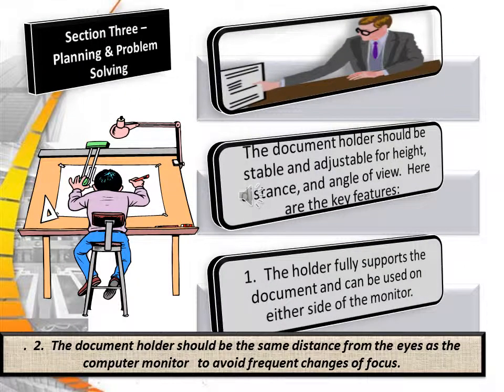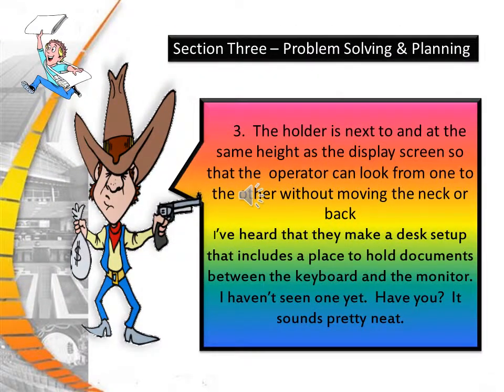The document holder should be stable and adjustable for height, distance, and angle of viewing. The holder fully supports the document and can be used on either side of the monitor. The document holder should be at the same distance from the eyes as the computer monitor to avoid frequent changes of focus. The holder should be next to and at the same height as the display screen so the operator can look from one to the other without moving the neck or back.